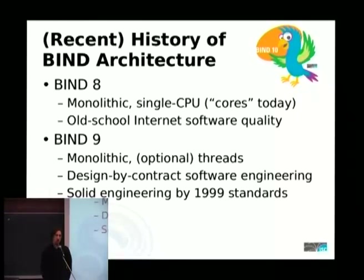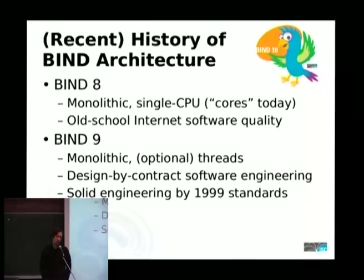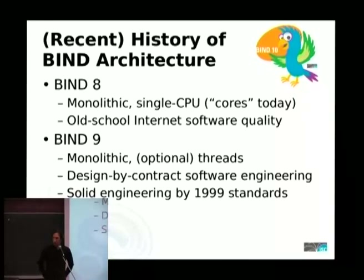In order to improve the quality of the software, because of all the problems that had happened with Bind 8, they used a lot of the concepts from the design-by-contract approach. This is basically where you define pre-conditions and post-conditions for every function, which documents exactly how it's supposed to be called and what the conditions are supposed to be when it exits. You also set up some invariants for your data structures — what properties that data structure must have at all times. At the time it was quite solid engineering, preventing a lot of bugs from creeping in and ensuring that any problems won't be a security issue.